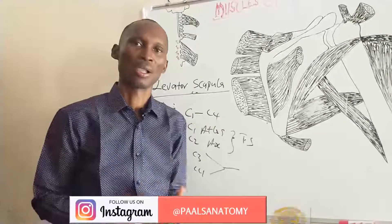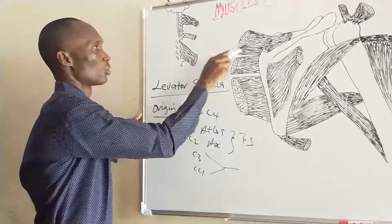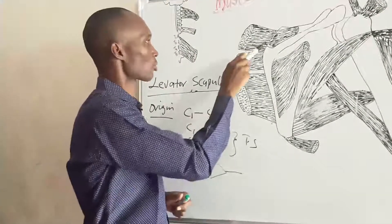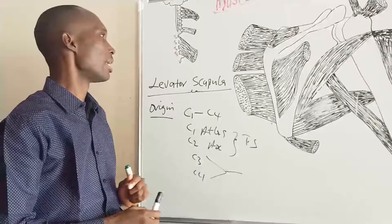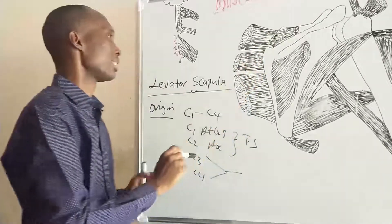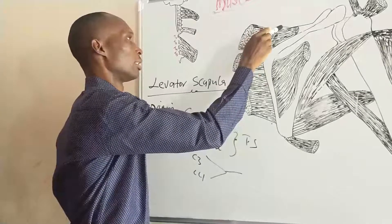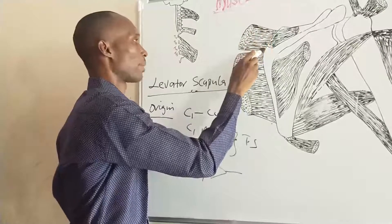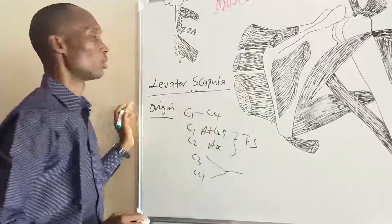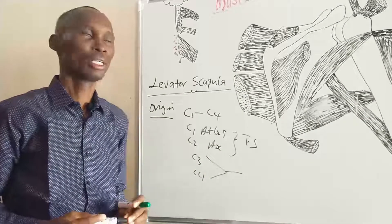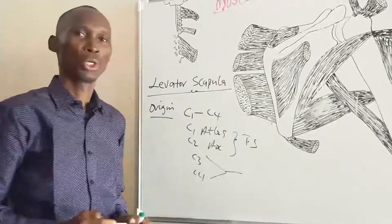Now let's look at the insertion. It takes origin from the upper part and then runs diagonally down to its insertion. It runs to the medial border of the scapula towards the dorsal surface, inserting on the point between the superior angle of the scapula to the upper point of the root of the spine. So the levator scapula inserts on the medial border of the scapula from the superior angle to the upper part of the root of the spine.